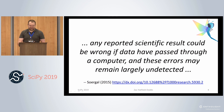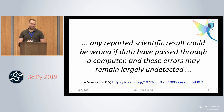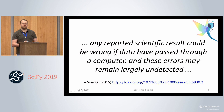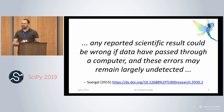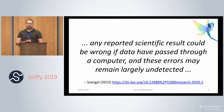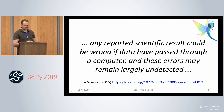The other side of this is my favourite quote: any reported scientific result could be wrong if data have passed through a computer. Fifty years ago, this would not have been a problem — maybe for a few fields in certain parts of physics or engineering. For most fields, data passed through computers, but those computers were human workers — mostly women with extensive training in mathematics who very, very rarely got any credit for their work.